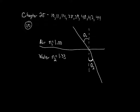Does anybody remember what Snell's law tells us? n1 sine theta 1 equals n2 sine theta 2. We're asked to find what is the angle we're entering the water with - so which variable is that? That's theta 1, so we need to find theta 1.